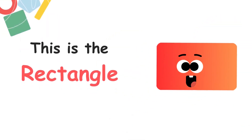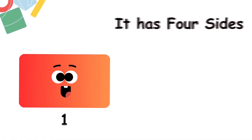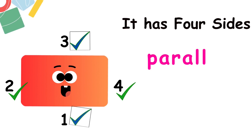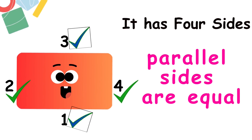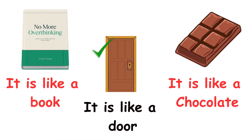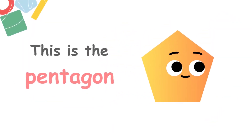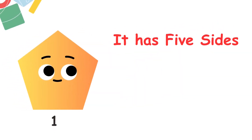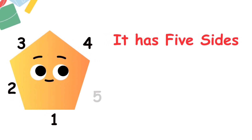This is the rectangle. It has four sides — one, two, three, four — and its parallel sides are equal. Its shape is similar to a book, a door, and a chocolate bar.